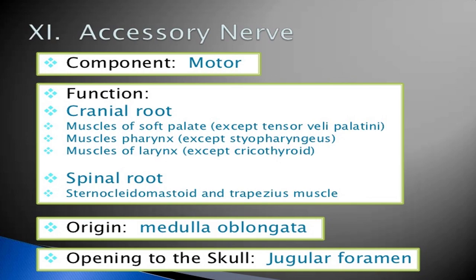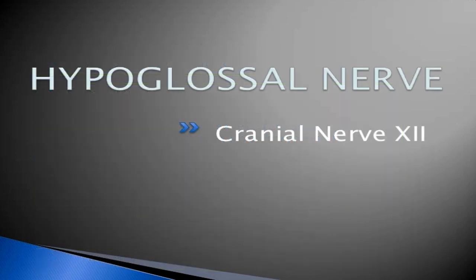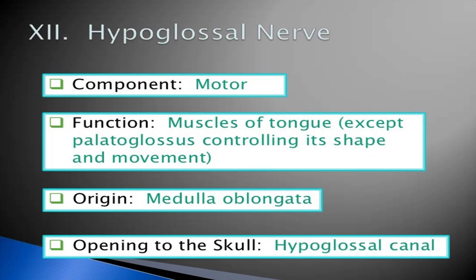The last is the hypoglossal nerve, which is the twelfth cranial nerve. Its component is motor. Its function is to supply the muscles of the tongue and help in its movement. Its origin is the medulla oblongata. The opening of the skull is the hypoglossal canal.